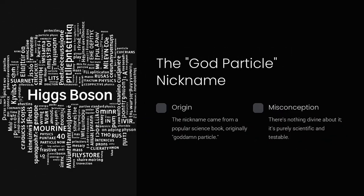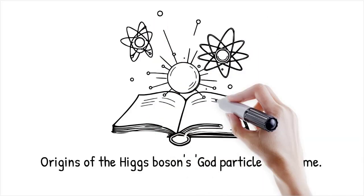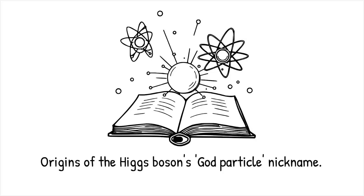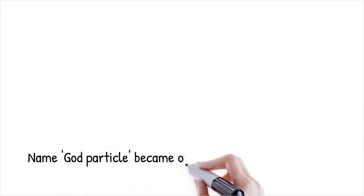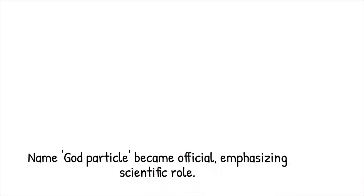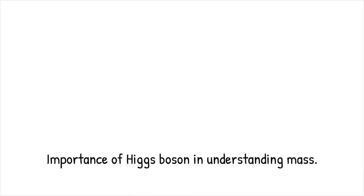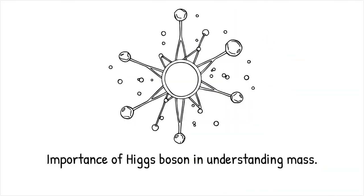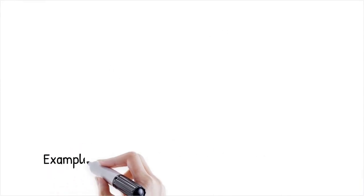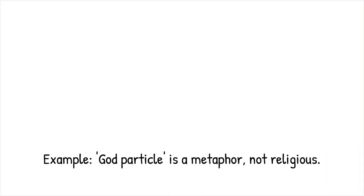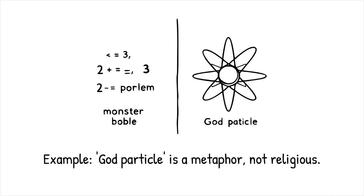The Higgs boson is often called the God particle, but this nickname can be misleading. The term came from a popular science book where the author used it partly in jest, originally calling it the 'Goddamn particle' because it was so hard to find. A publisher changed it to 'God particle' to be less offensive, and the name stuck. In reality, there's nothing divine about it. Physicists prefer to emphasize that the Higgs boson is simply a crucial part of the standard model of particle physics — a model that's purely scientific and testable.